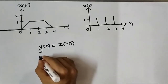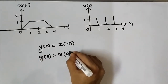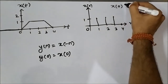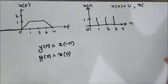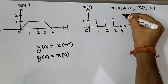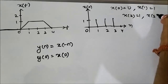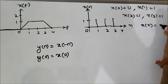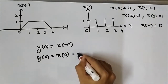First, y[0] will be x[-0], which is the same as x[0]. Here x[0] is equal to 0, x[1] is equal to 1, x[2] is equal to 1, x[3] is equal to 1, and x[4] is equal to 0. So y[0] is equal to 0.